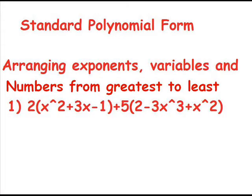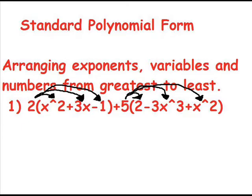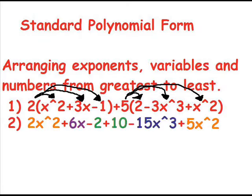Now we're going to learn about standard polynomial form. You have to arrange exponents, variables, and numbers from greatest to least. For example, take this problem. It looks fairly complicated, but if you use standard polynomial form, you'll see that it's really quite easy. First, you have to distribute 2 and 5 into the parentheses next to them. What you get is 2x squared plus 6x minus 2 plus 10 minus 15x cubed plus 5x squared.